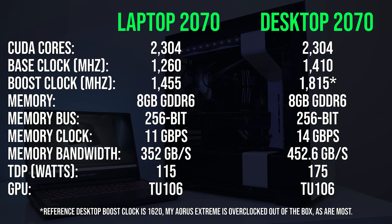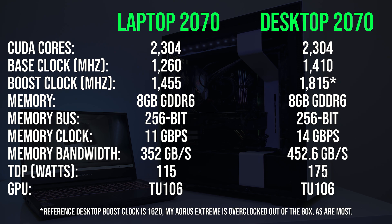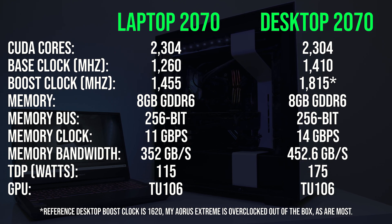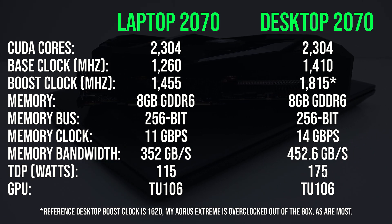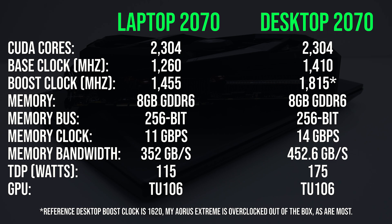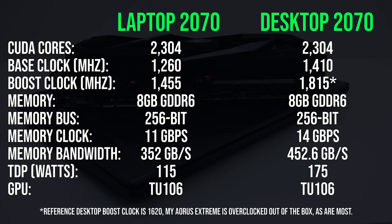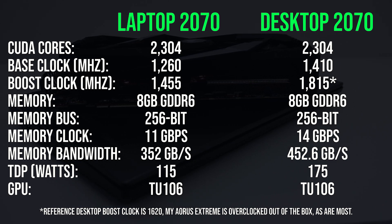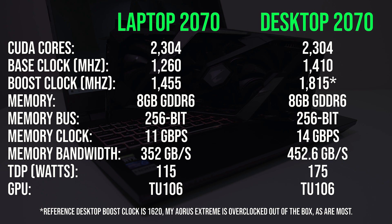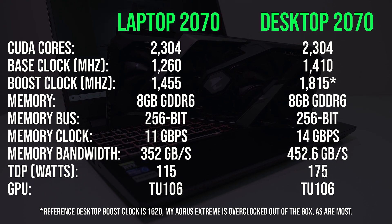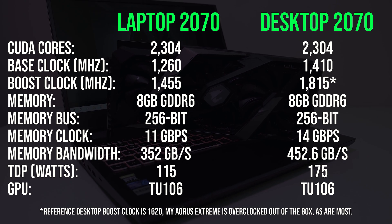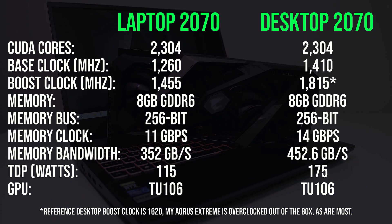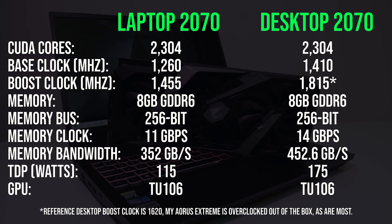Let's start with the spec differences between the desktop and laptop 2070. They're similar for the most part — same GPU core, same amount of CUDA cores, and memory. The key difference is the desktop 2070 has faster memory and a higher power limit. The desktop option has a higher TDP, which is possible due to cooling being less of a restriction compared to the smaller space of a laptop. More power equals more heat, so the laptop runs with a lower power limit, and more power results in more performance with higher clock speeds.